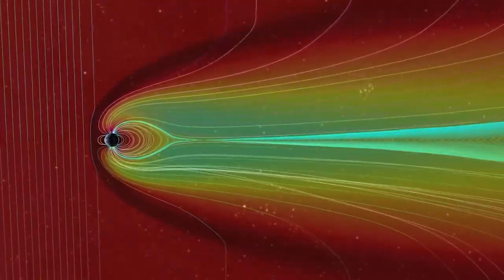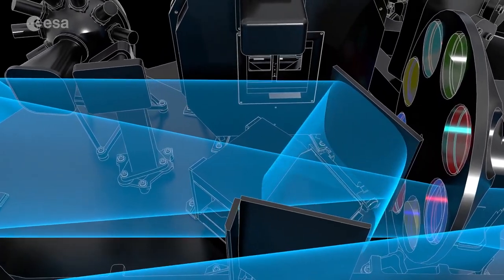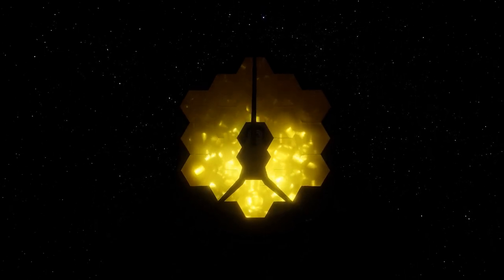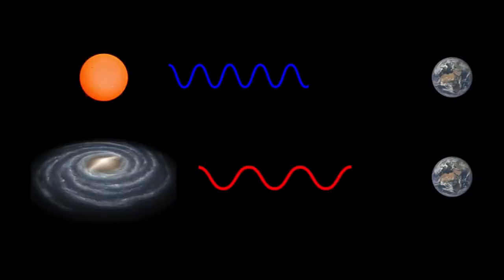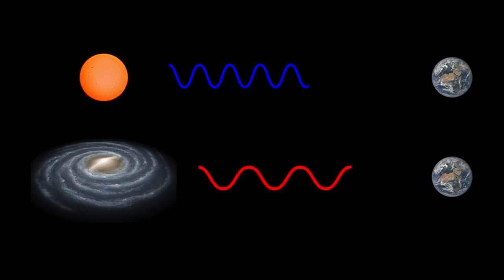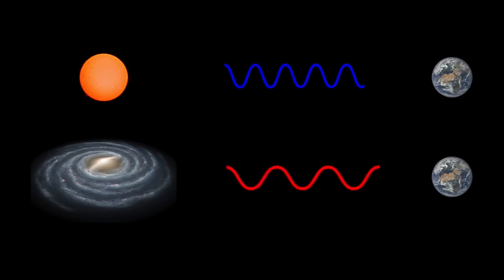The spectrum of WASP-96b captured by NIRIS is not only the most detailed near-infrared transmission spectrum of an exoplanet atmosphere captured to date, but it also covers a remarkably wide range of wavelengths including visible red light.